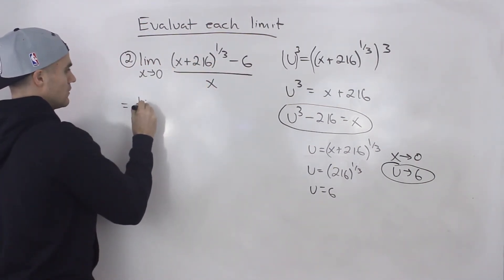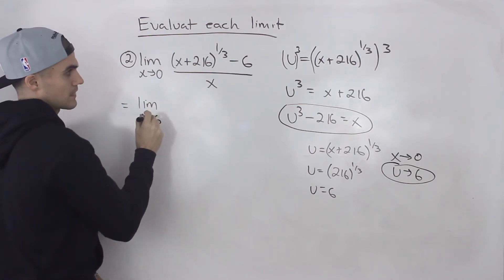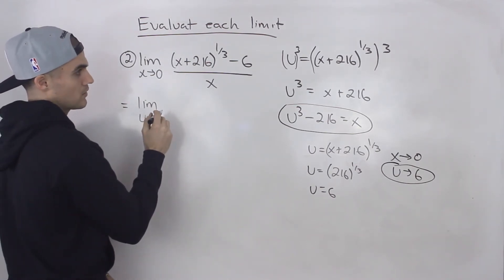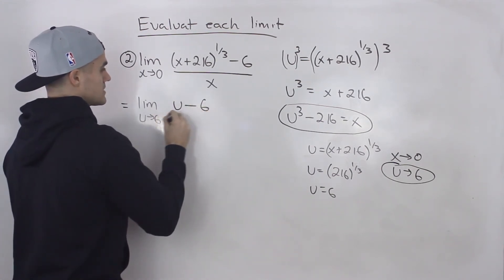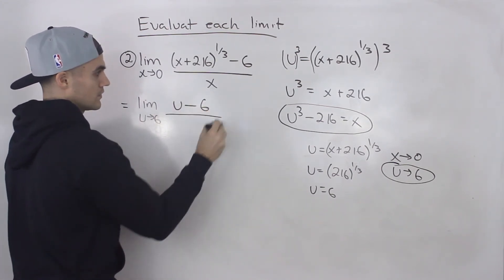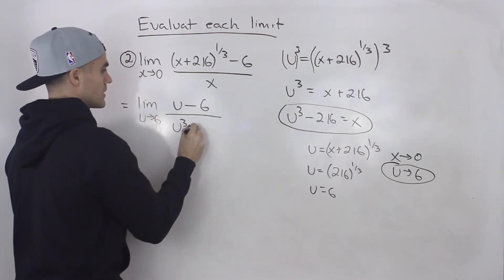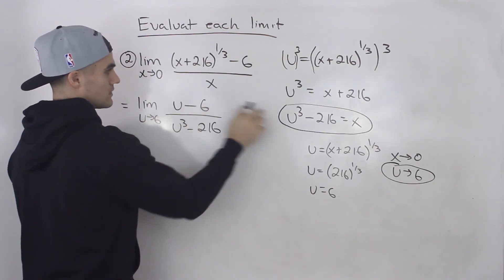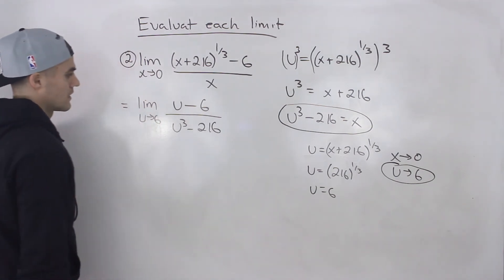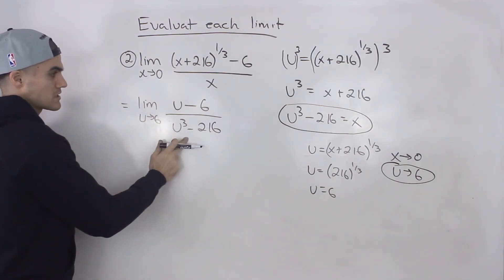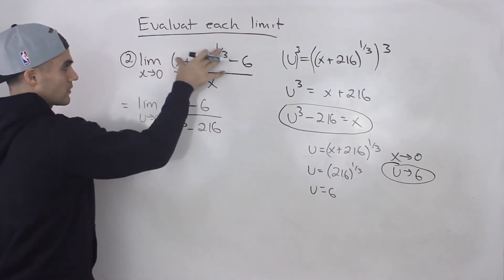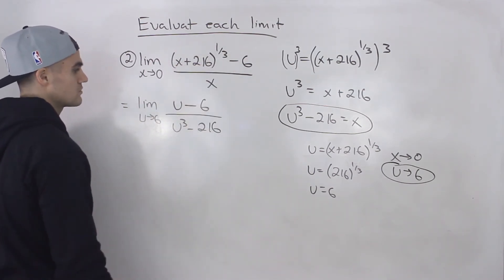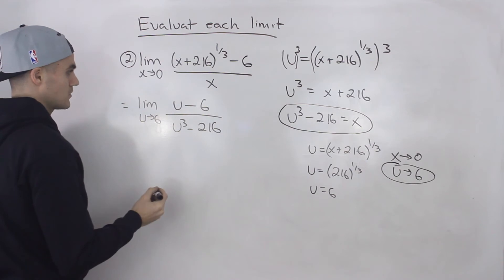So we can now make a substitution for that x approaching zero as well. So we can rewrite all of this as the limit as u approaches six. x plus 216 to the power of one over three is just u minus 6 all over u to the power of three minus 216. Right? This expression for x. And notice we can't make a direct substitution yet, but already this is looking a lot nicer. There's no radicals or ugly radicals to deal with or rational exponents.